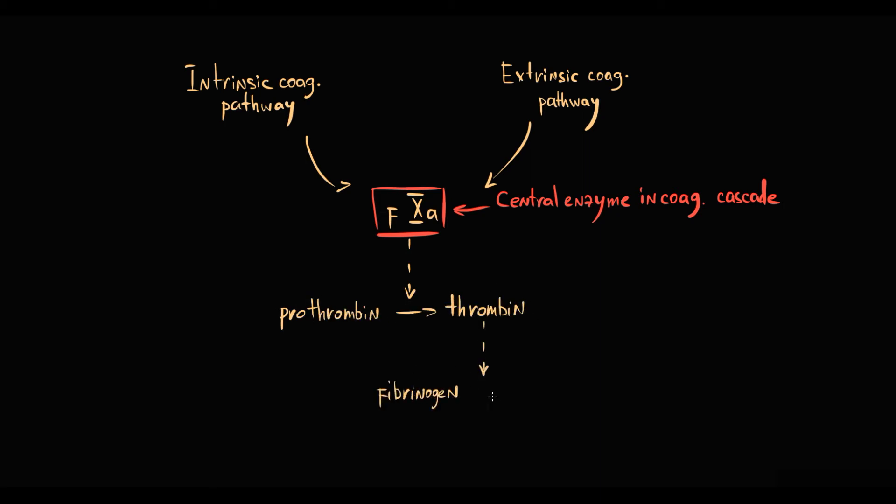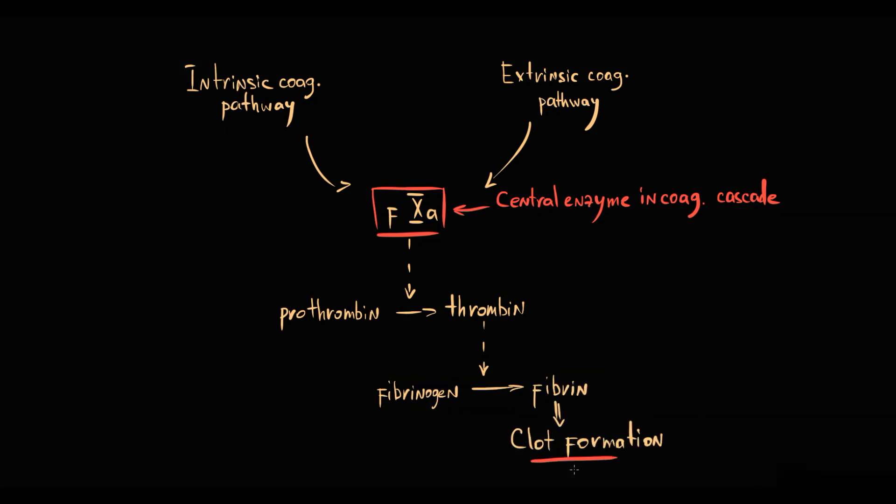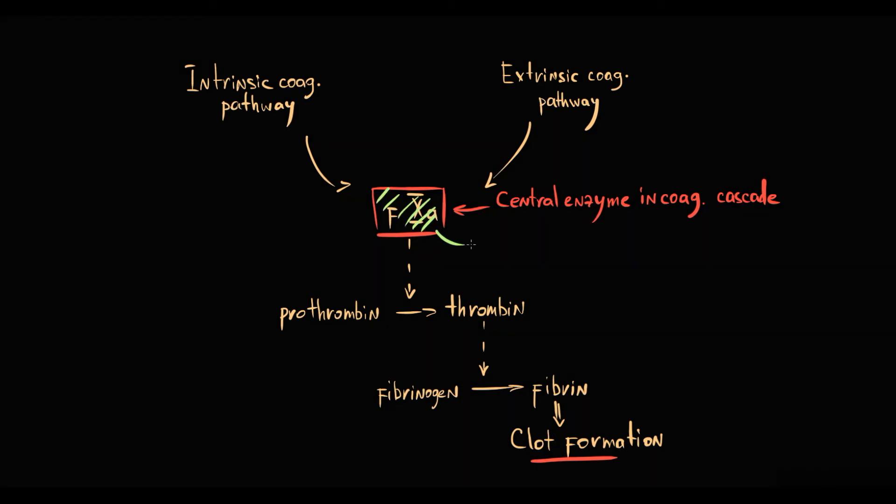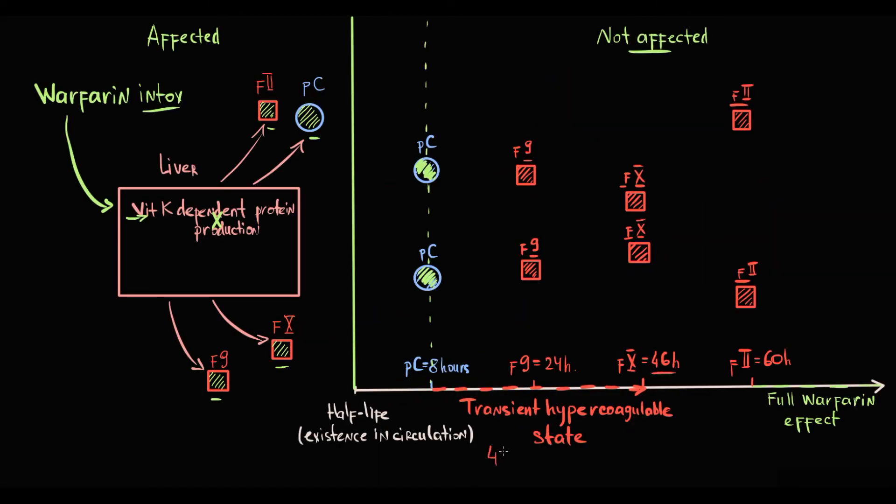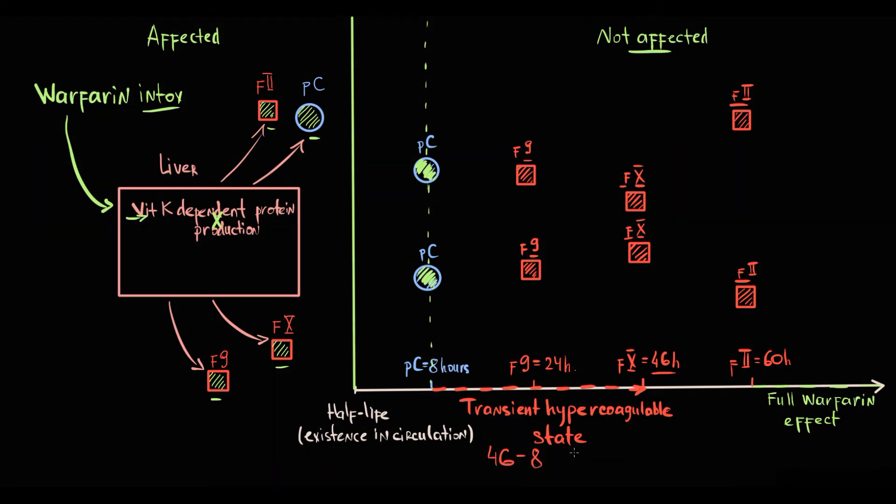To explain why, recall that the intrinsic coagulation pathway and extrinsic pathway both result in activation of factor 10. And factor 10 is the central enzyme and the most crucial enzyme in the coagulation cascade. Then activated factor 10 converts prothrombin into thrombin, and thrombin converts fibrinogen into fibrin, which finally results in clot formation. So basically factor 10 is the crucial pro-coagulative protein, and without factor 10, the risk of thrombotic complications will be substantially lower. So everything depends on how long factor 10 exists in the circulation. And the half-life of factor 10 is approximately 46 hours. And 46 minus 8 and minus 2, which is the approximate period of warfarin absorption and initial metabolism, equals 36 hours.